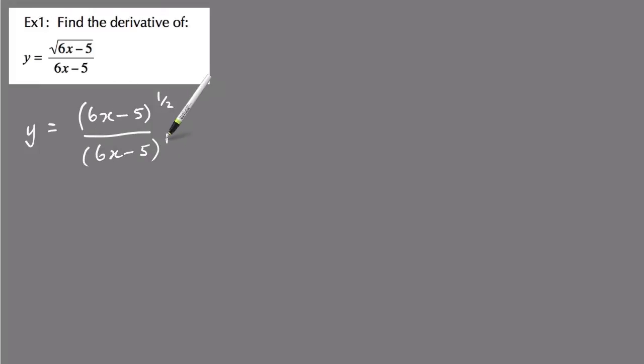And that is really to the power of 1, and then use the index law when you're dividing and the bases are the same, you just minus the powers, so that becomes 6x minus 5 to the top power of 1 half minus the bottom power 1, and then that equals 6x minus 5 to the minus 1 half.